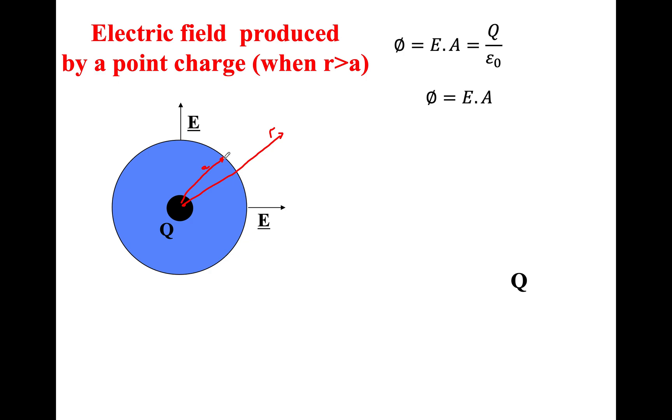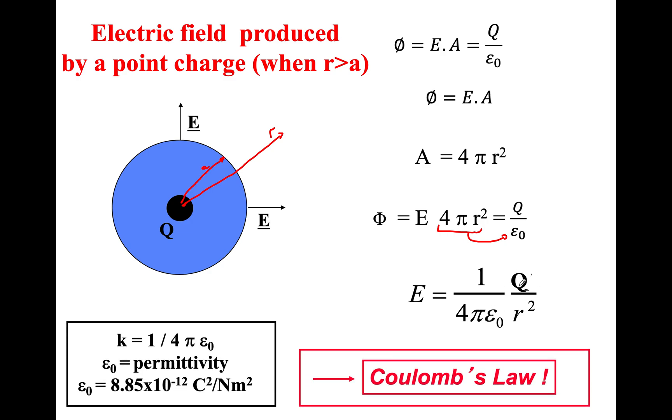So we'll use EA equals Q over epsilon naught. We'll take that rule here. We know that EA, so A is the area of this, 4 pi R squared. I'll take E multiplied by 4 pi R squared equals Q over epsilon naught. Rearrange. Take the 4 pi R squared over to the other side and divide. And hold on a second. This looks very familiar. This is clearly Coulomb's law. Same thing. This is K and this Q over R squared. So outside we have proved this is simply Coulomb's law.